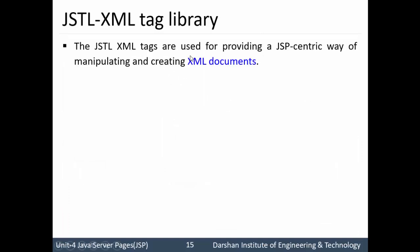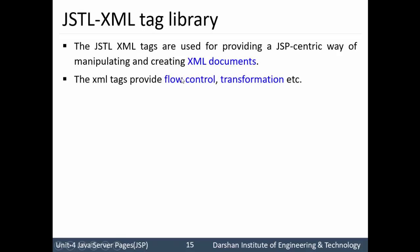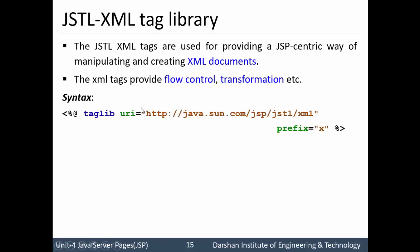The JSTL XML tag is used for providing a JSP-centric way of manipulating and creating XML documents. We are going to parse XML tags, and this tag provides flow control, transformation, etc. The syntax for the same — the URI of taglib — is JSP, JSTL, and XML with prefix as X.